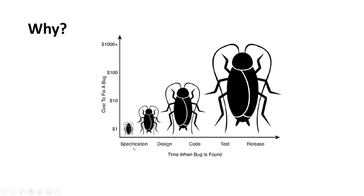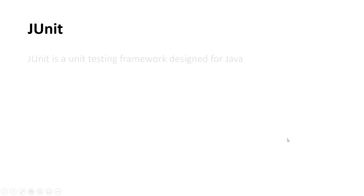It becomes more and more expensive to correct an error the further we get into the development process. So we should think about early testing — we can start at the requirement specification, testing requirements against the client to verify they are correct. We can also test the UML design diagrams before we start coding.